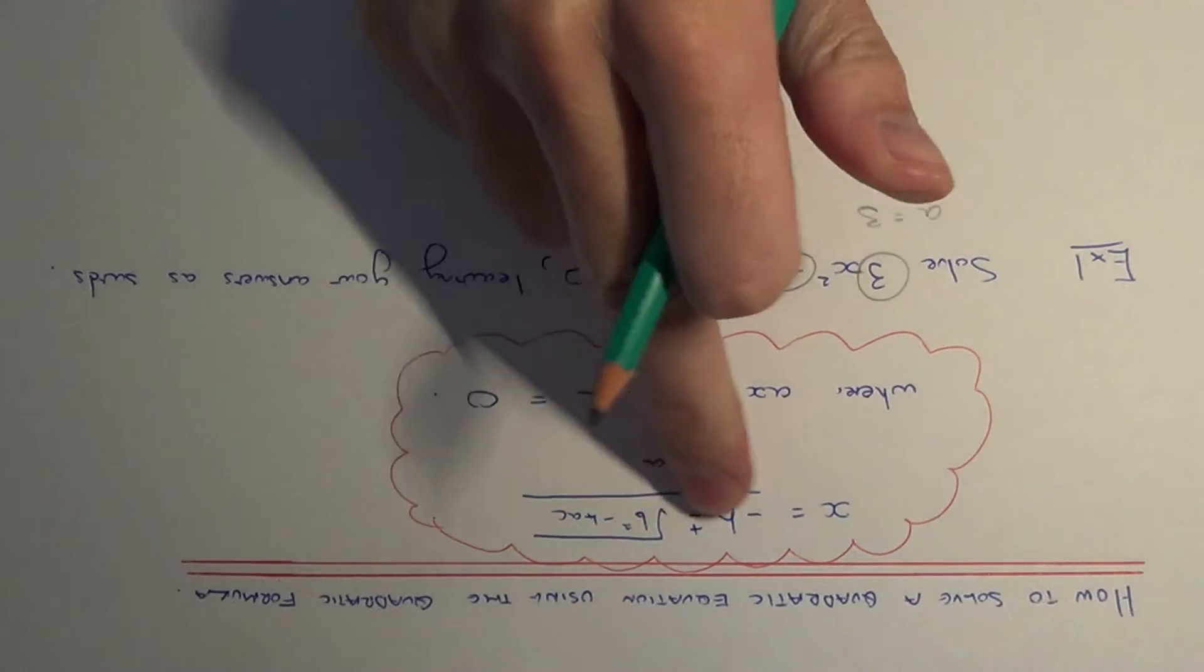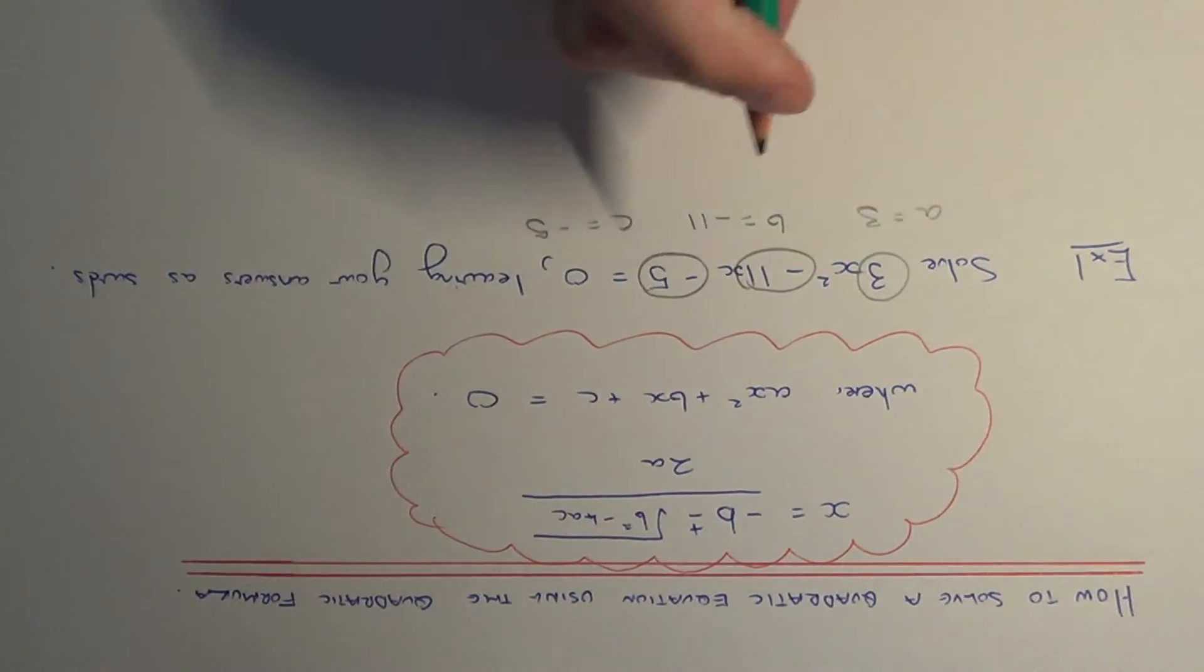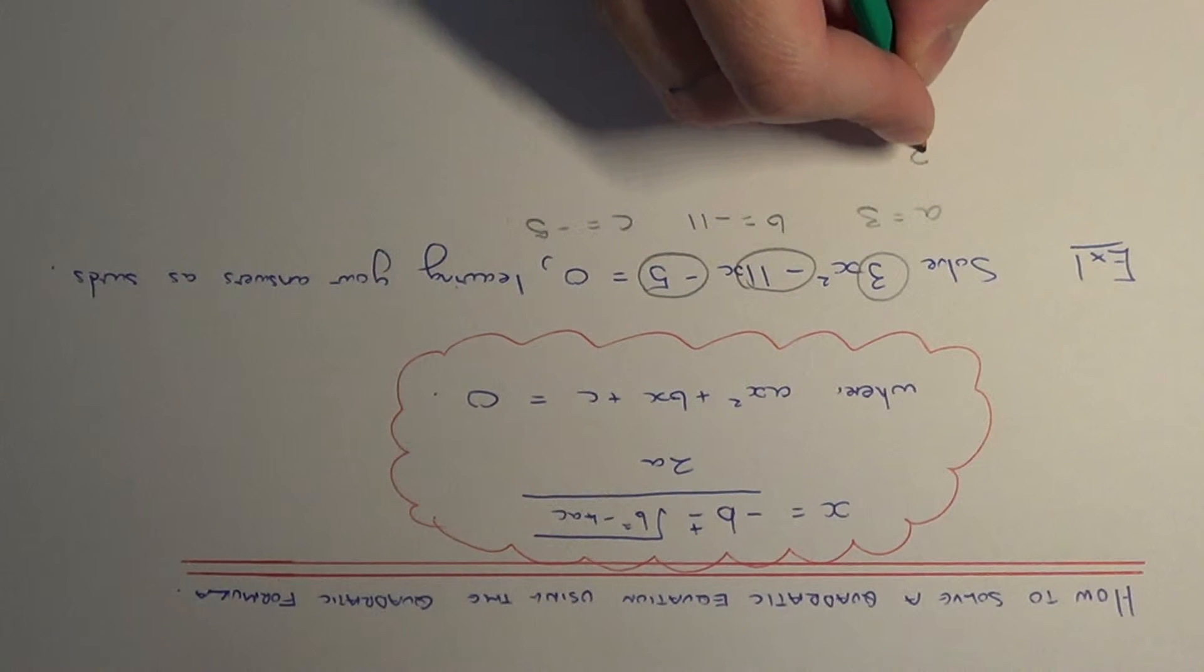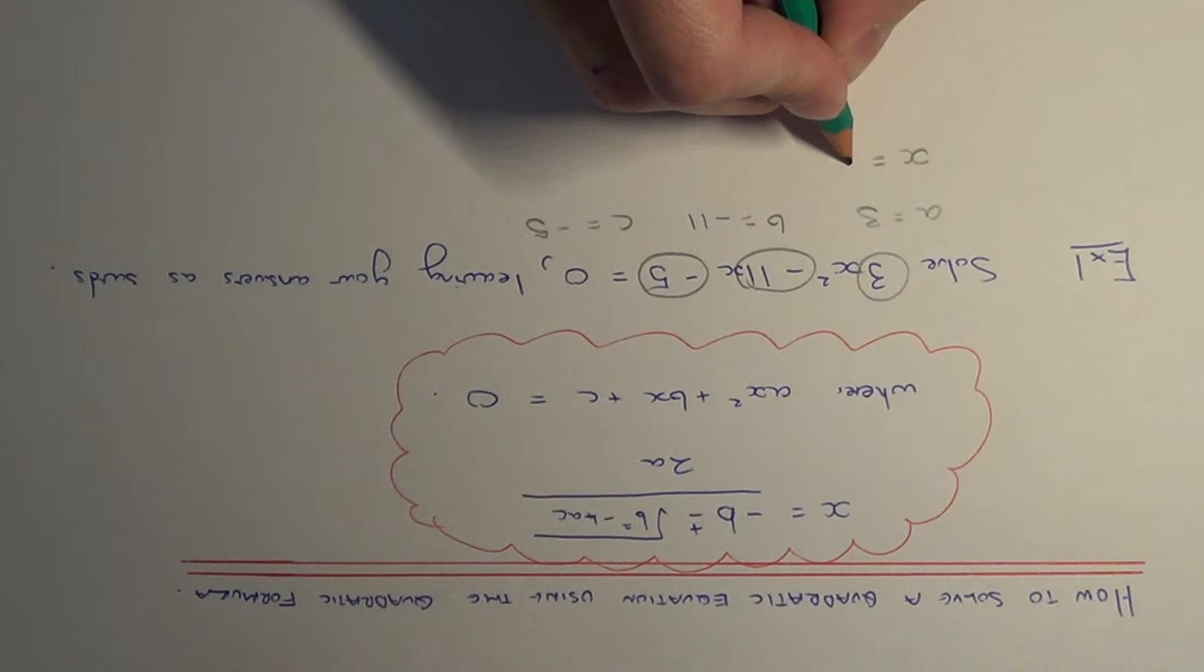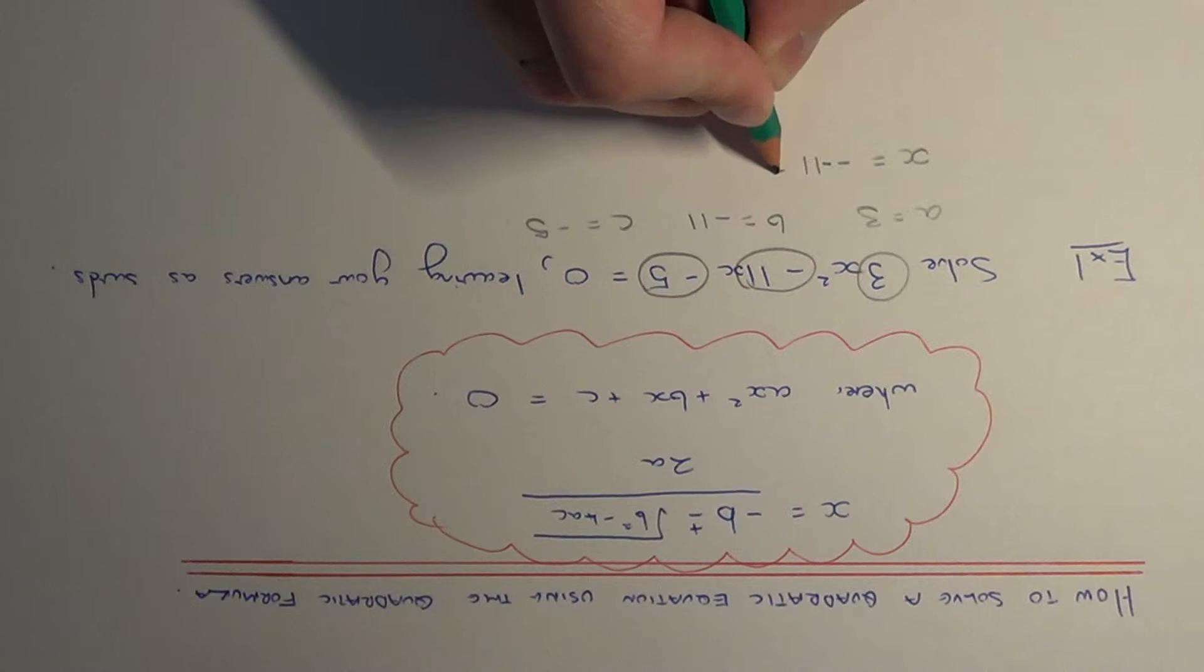Now we substitute these three numbers into the formula above. So x will equal minus b, which would be minus minus 11, plus or